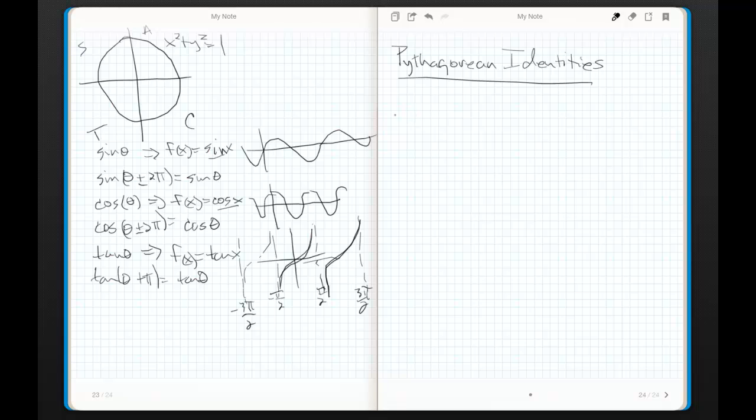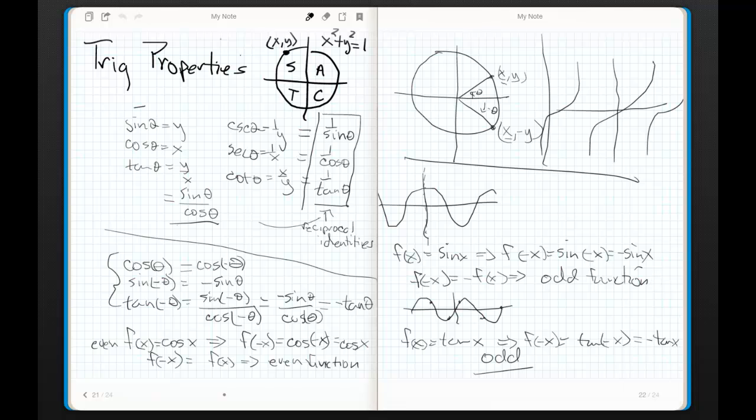The Pythagorean identities, they're so easy to make, they're so elegant to work with, it's crazy. Look first, where do all of my values come from for sine, cosine, and tangent?